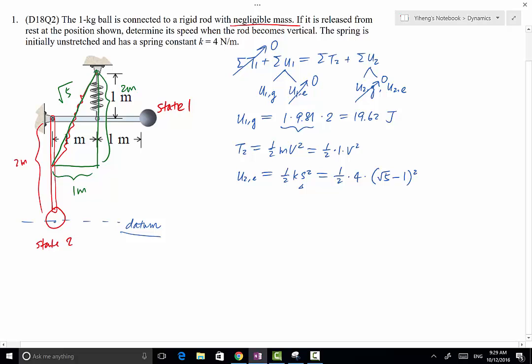So this is the elastic potential energy of state 2. And that equals to 3.06 joules. Now we're ready to write our equation. On the left hand side, we only have U1g, which is 19.62. On the right hand side, we have 1 half v squared plus 3.06.